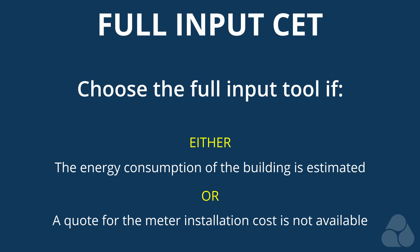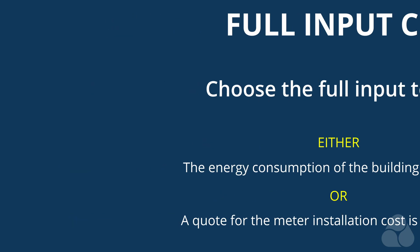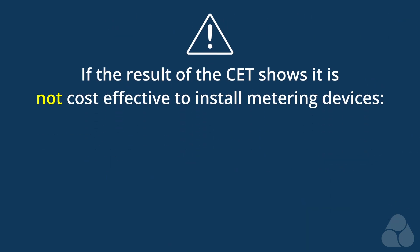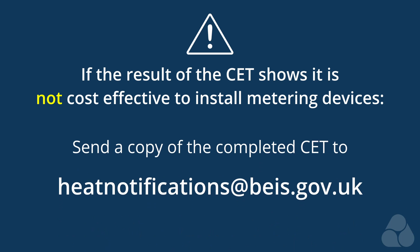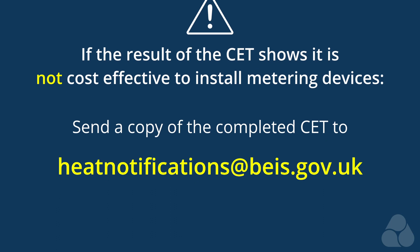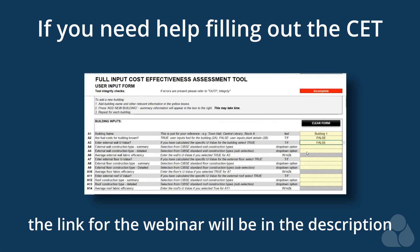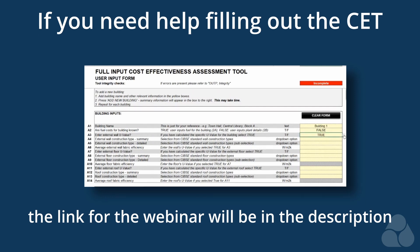Even if the energy consumption for the building is known, if it is deemed not cost-effective to install metering devices, OPSS recommends that the heat supplier sends a copy of the completed CET to the Heat Network's team at heatnotifications@beis.gov.uk. If you require help with filling out the CET, the Heat Network's team has recorded a webinar which will walk you through the CET step-by-step. The link for this recording will be included in the description of this video.